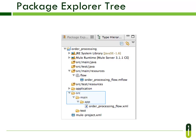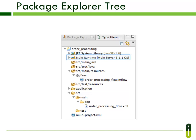The src/main/app folder contains the flow XML files, and the src/main/test folder contains flow-related test files. The Mule project XML contains project metadata — you can edit the name, description, and server runtime version for the specific project. The JRE system library contains the Java runtime libraries, and the Mule runtime contains the Mule runtime libraries.